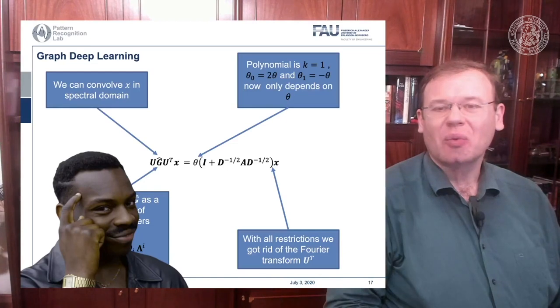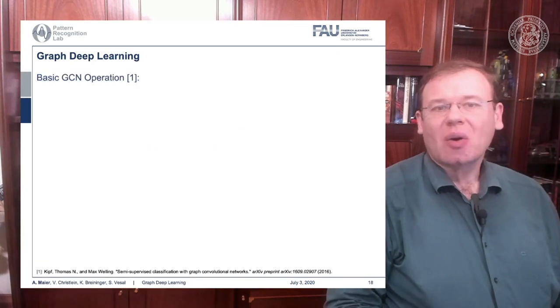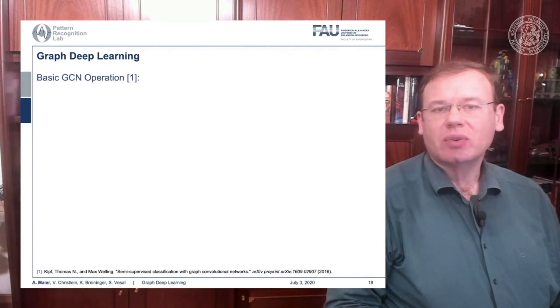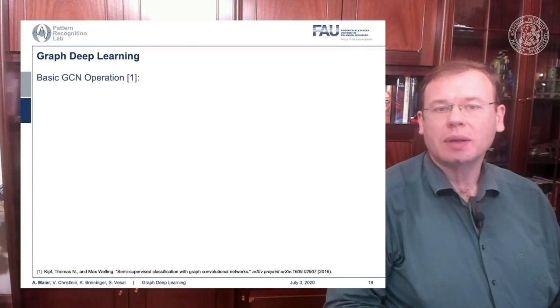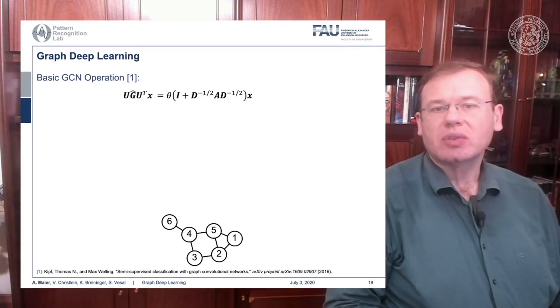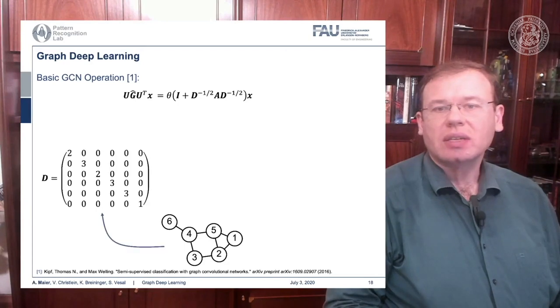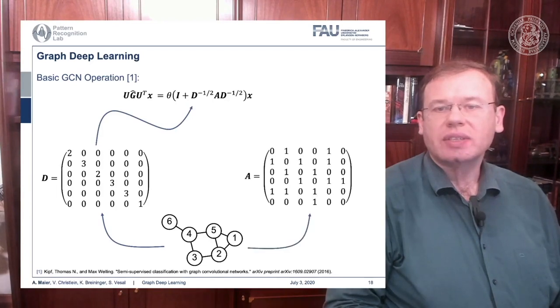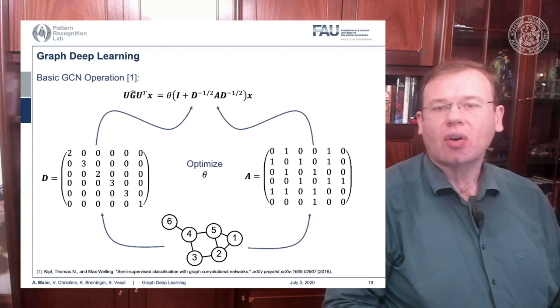We suddenly can express graph convolutions in this simplified way. This is the basic graph convolution operation, and you can find this actually shown in reference number one. You can essentially do this with a scalar value using your degree matrix and adjacency matrix, then optimize with respect to theta to find the weight for your convolutions.